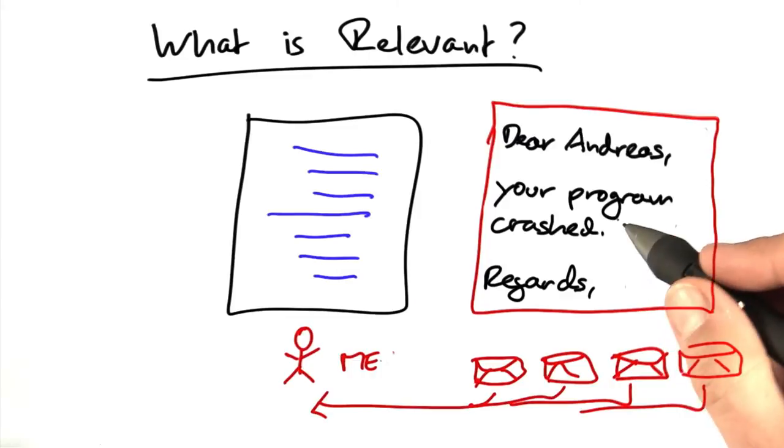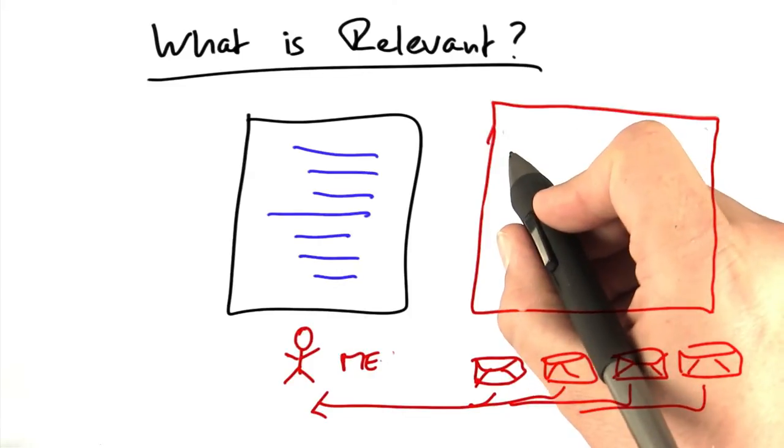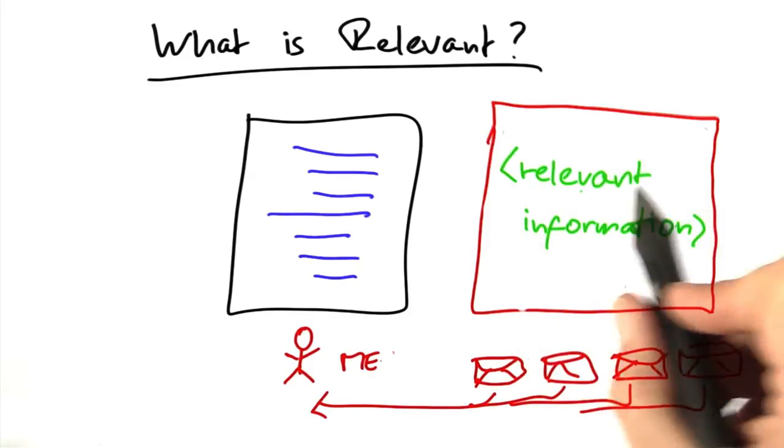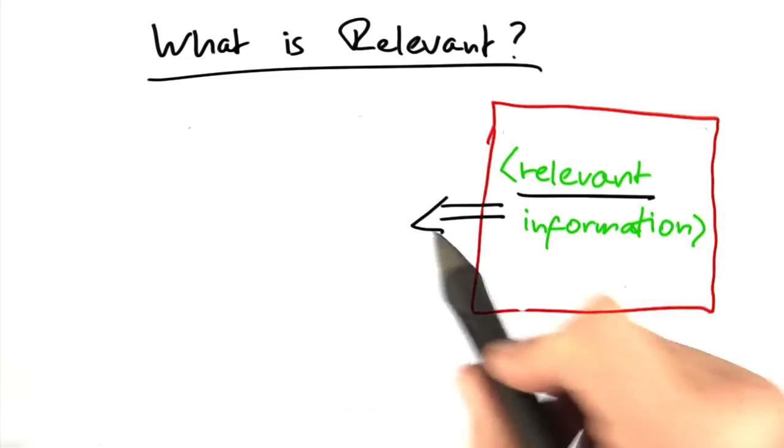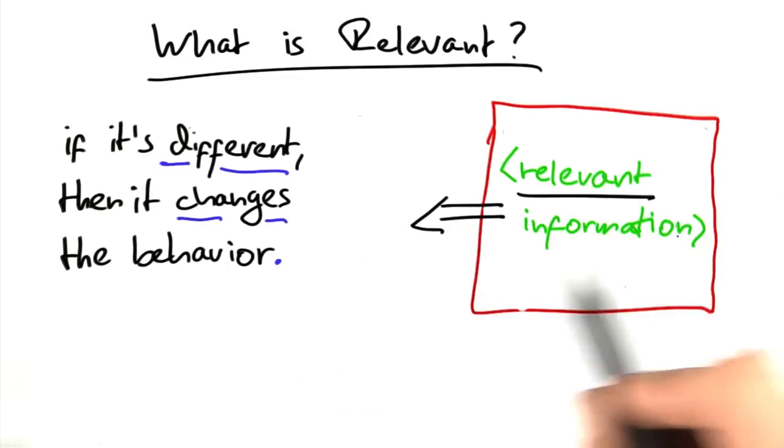And others would send in just a one-liner, your program crashed, which was less information than I would need. What you'd like to have in a bug report is information that is relevant. And here, relevant means if it's different, then it changes the behavior.